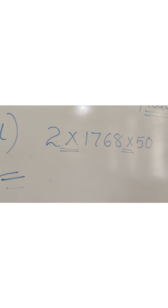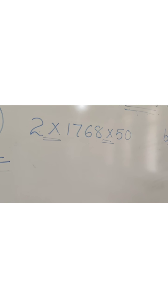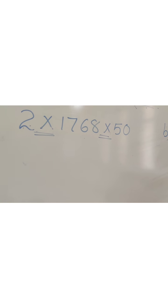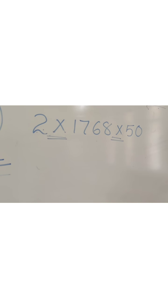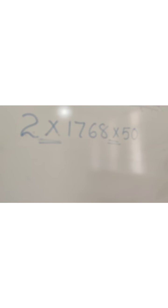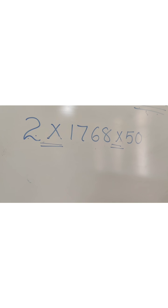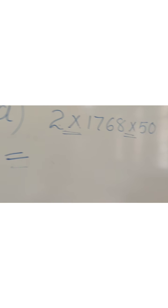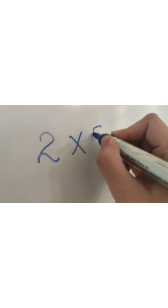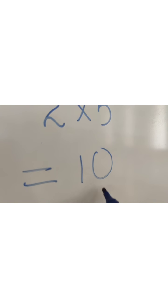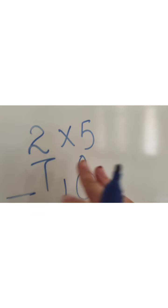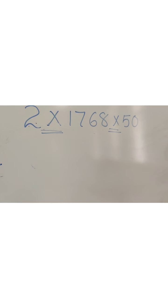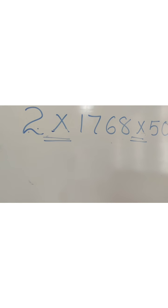We are going to change the order of the numbers and multiply them to find the answer. We will change their order in such a way that we get 0 at the ones place. We will select 2 numbers whose multiplication gives us 0 at the ones place — this will make multiplication easier. For example, 2×5 = 10, so multiplying these two numbers gives us 0 at the ones place. So we will make this number pair.